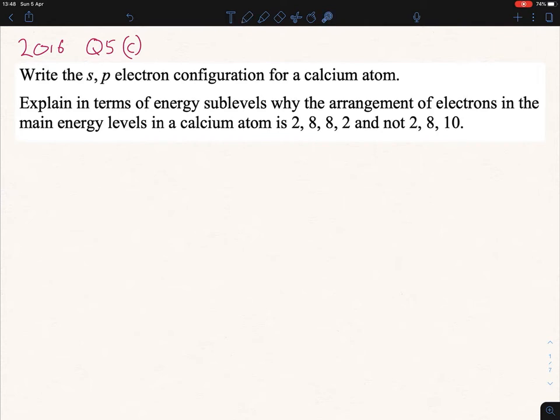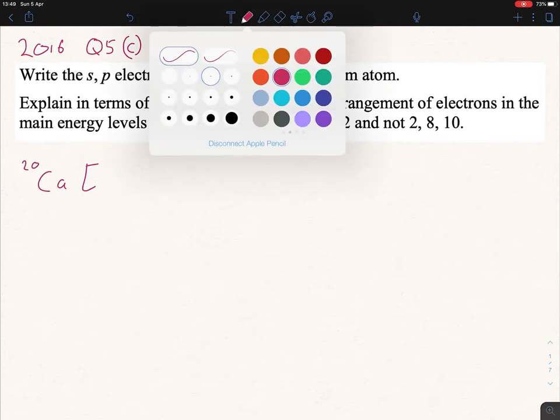We're asked to write the electron configuration for a calcium atom. If it's calcium, you go to the periodic table and find where calcium is. It's a neutral atom, so the number of protons equals the number of electrons. Calcium has 20 protons, so it also has 20 electrons.